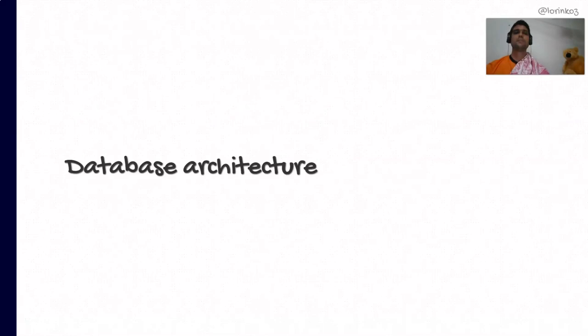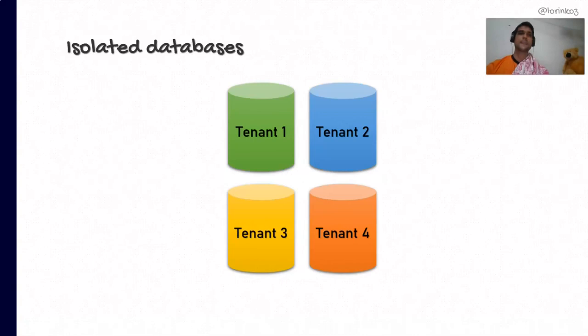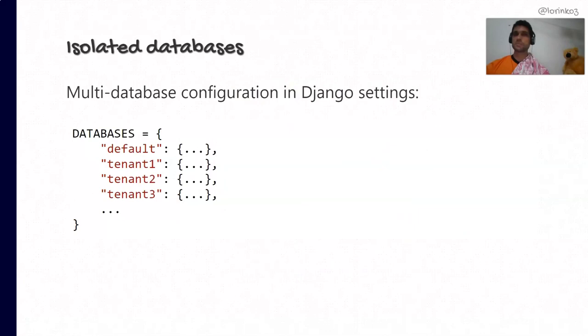Next, the database architecture — and we have three choices. The isolated approach: multiple databases, one per tenant. The shared approach: a single database with tenant columns on entity-level tables. And finally, the semi-isolated approach: a single database where tenant data is stored inside Postgres schemas. Let's take a look at each one.